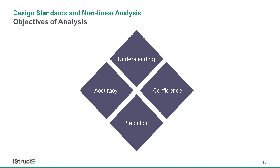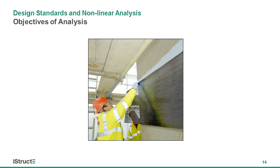The other axis is about what's most important about the result. We might naturally think the most important thing is accuracy. But one of the things I've learned is that sometimes it feels quite right to trade some of that accuracy if you get greater confidence that the result is on the safe side. This was really brought home to me in work I did on developing design rules for FRP strengthening of structures — probably in the early 2000s when I was engaged in research work, development of design rules and best practice guides, and some early pioneering projects around FRP strengthening of concrete structures.